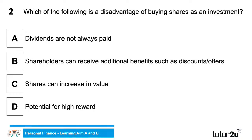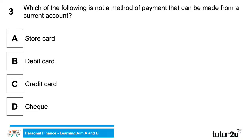Next question — which of the following is a disadvantage of buying shares as an investment? A) dividends are not always paid, B) shareholders can receive additional benefits such as discounts or offers, C) shares can increase in value, or D) potential for high return. We're looking for the disadvantage. Loads of people getting the correct answer — Chris, the answer is A: dividends are not always paid, as firms are not obliged to pay shareholders a dividend at the end of the year.